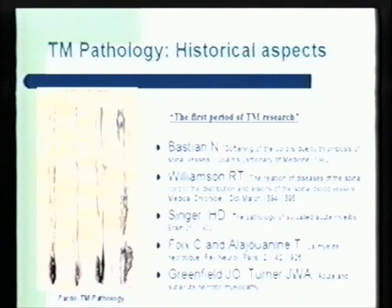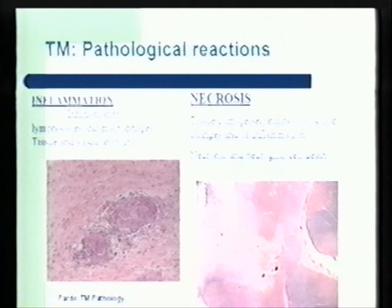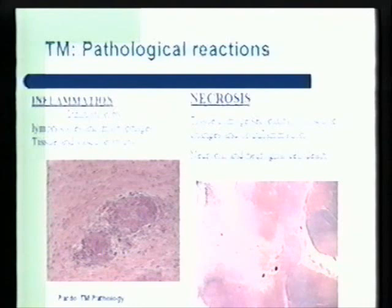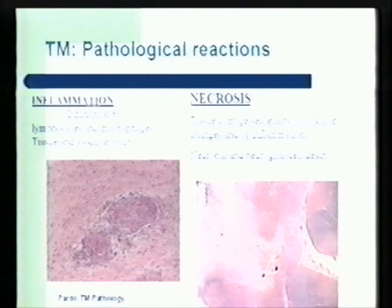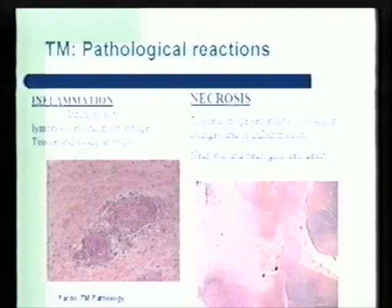Someone asked yesterday what necrosis means. Necrosis is the result of tissue damage. When we have a stroke, we get necrosis because we cut the blood supply to the spinal cord or brain, and that tissue dies. Inflammation is the tissue reaction against some type of injury, mediated by inflammatory cells — white blood cells that migrate to the spinal cord and produce injury. Many of the problems associated with transverse myelitis are the direct consequence of this type of tissue response.